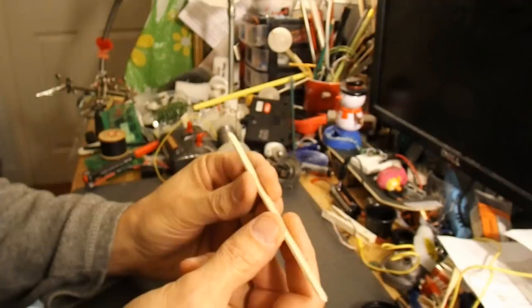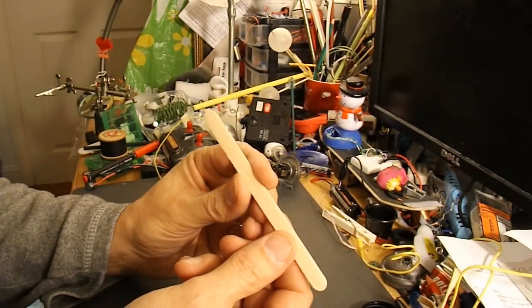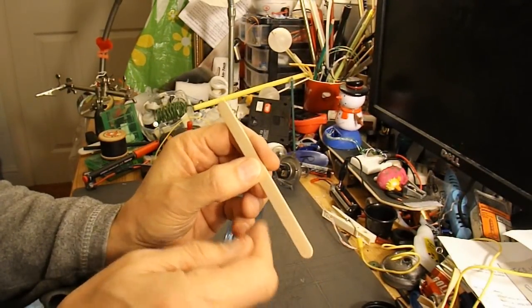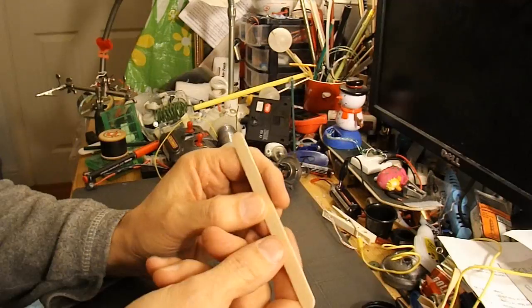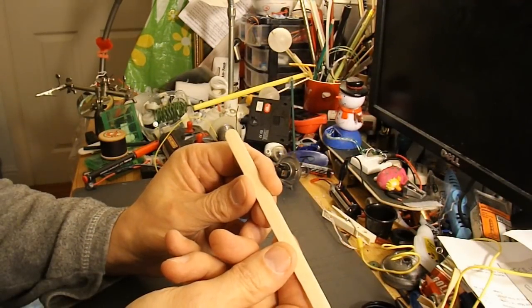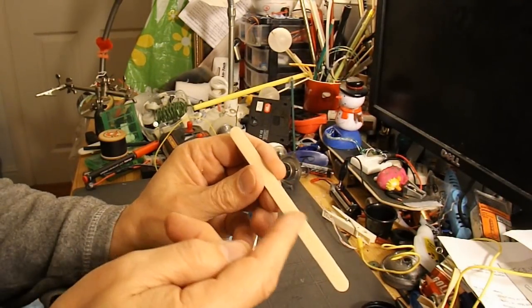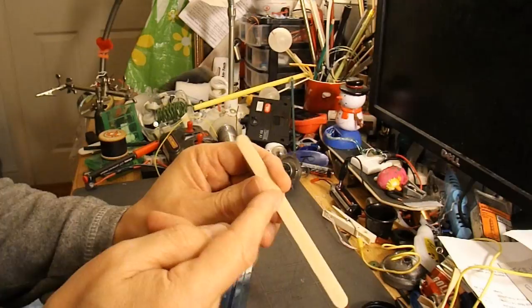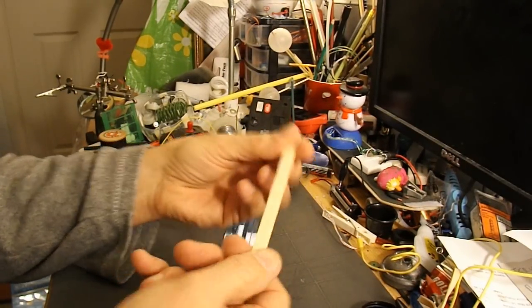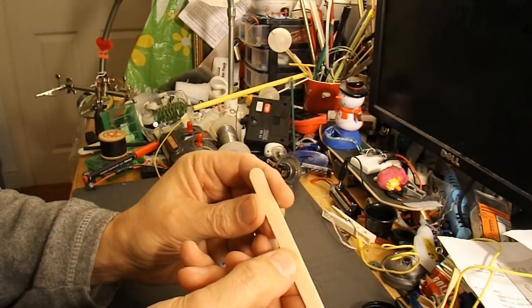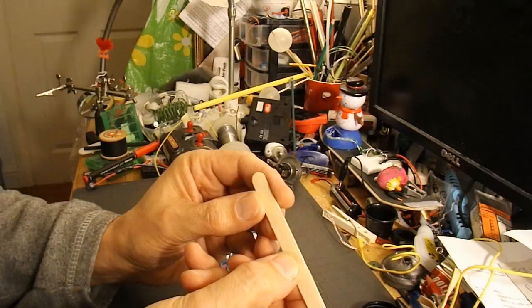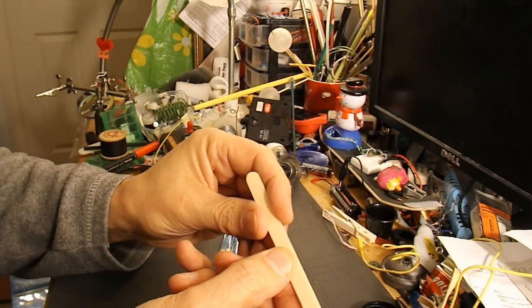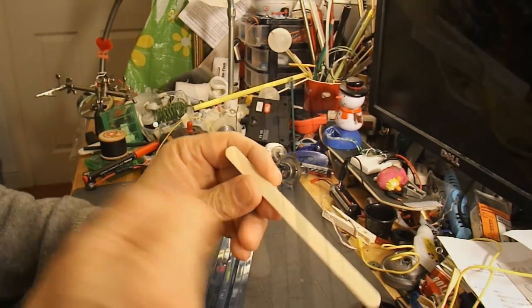There we have a popsicle stick. It's not quite as nice as the ones I've been making propellers out of recently, which are nice, sort of, figure-eight shaped ones. So, what I'll do is, I'll cut this one into a much shorter length. And, yeah, I'll do it, and then you'll see.